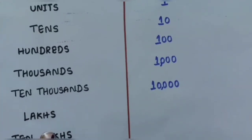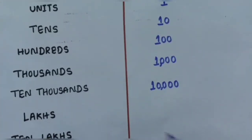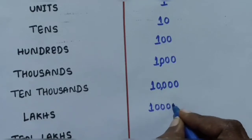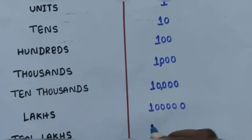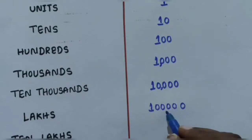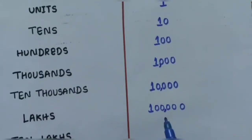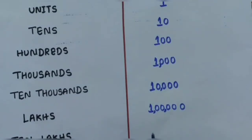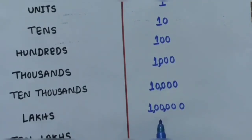Next is Lakh, written as 1,00,000 - that is one followed by five zeros. The first comma is applied after 3 digits from the right for hundreds, and the second comma is applied for 2 digits for the Lakh place.